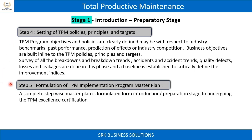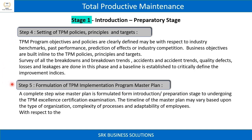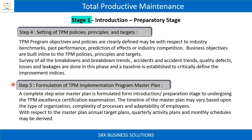Step 5: Formulation of the TPM implementation program master plan. A complete step-wise master plan is formulated from the introduction preparation stage to undergoing the TPM excellence certification examination. The timeline of the master plan may vary based upon the type of organization, complexity of processes, and adaptability of employees.